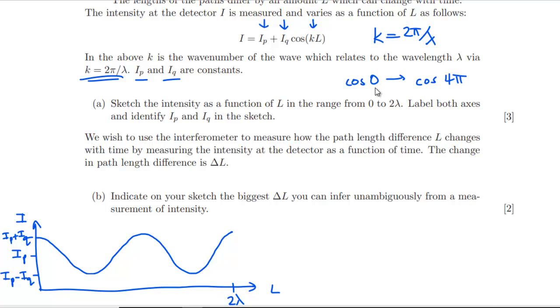We wish to use the interferometer to measure how the path length difference L changes with time by measuring the intensity at the detector as a function of time. So it's the opposite of this. The change in path length difference is ΔL. Indicate on your sketch the biggest ΔL you can infer unambiguously from a measurement of intensity. Right, so we need the inverse function then. So to get ΔL from I, we need the inverse of I as a function of L. And that means we need a one-to-one mapping, because you can only have an inverse function if you've got a one-to-one mapping, which we don't here.